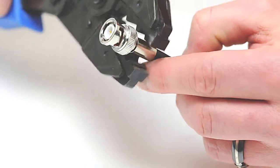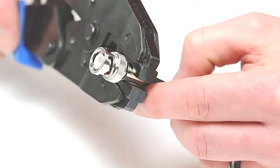Take your crimp tool and crimp the ferrule onto the jacket. This will create a secure connection.